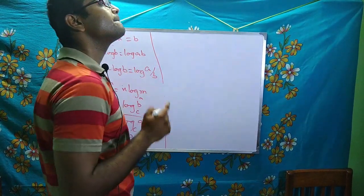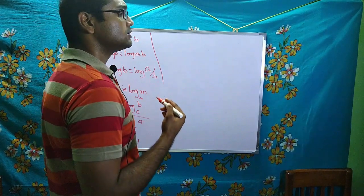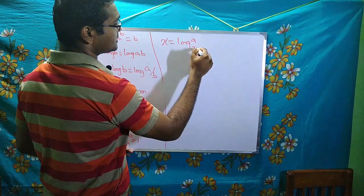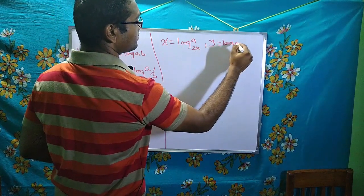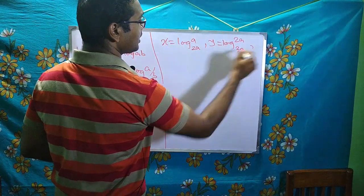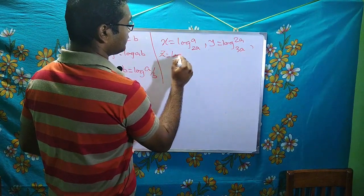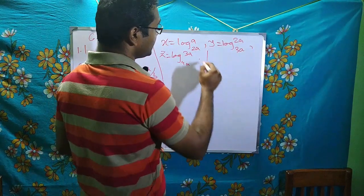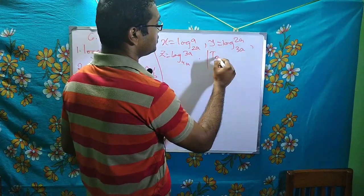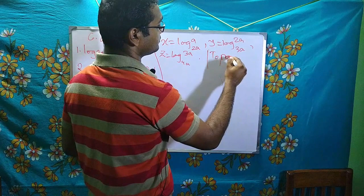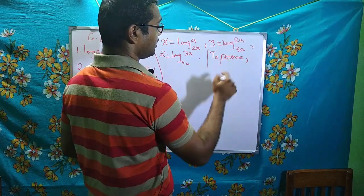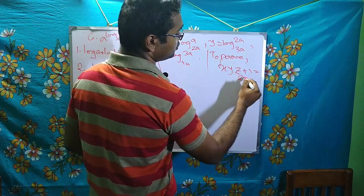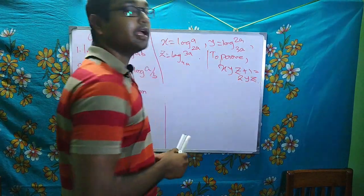Here is a problem. Given: x equals log a to the base 2a, y equals log 2a to the base 3a, z equals log 3a to the base 4a. We have to prove that xyz plus 1 equals 2yz.